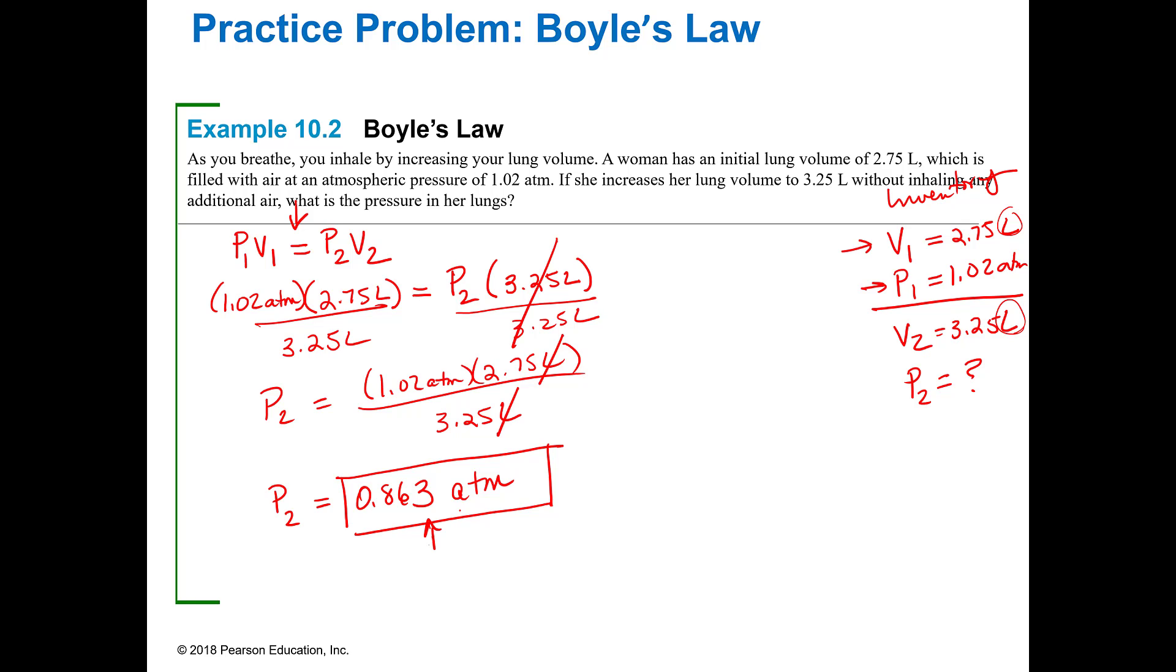Now you might get a little bit different in this last one, that's okay, depends on how you round things, but never round until the end. And so 0.863 atmospheres is what you should get when you put that in your calculator. Make sure that you're putting it in correctly, that you equal these two together before you divide. So that's Boyle's law. Pressure is inversely proportional to volume. So as one goes up, the other goes down. So I increased the volume from 2.75 to 3.25, so I would expect my pressure to be lower than 1.02. And it is. So that's kind of like my little mental check.